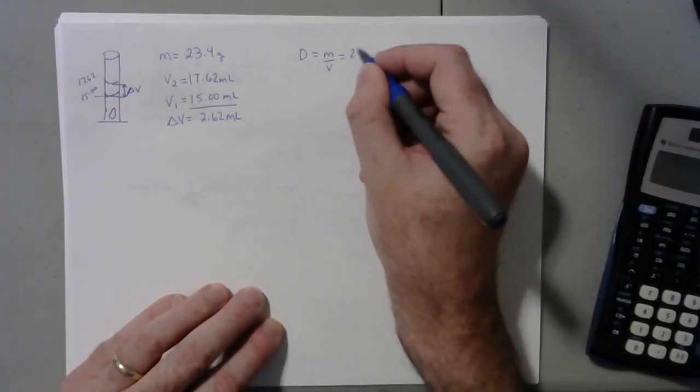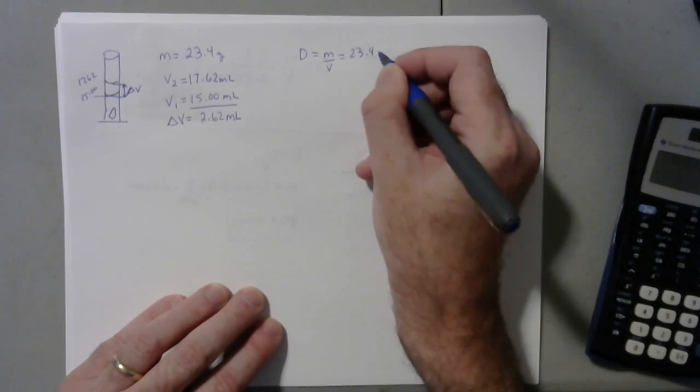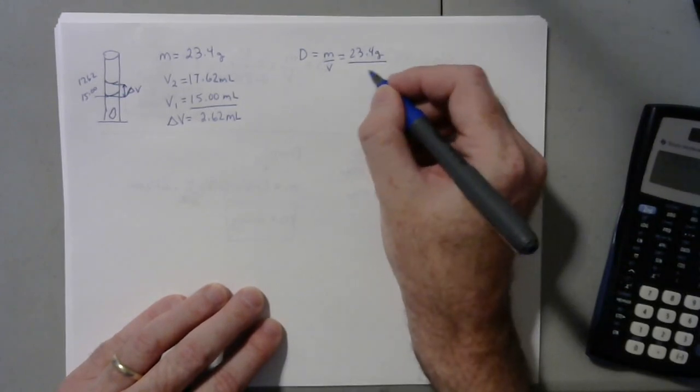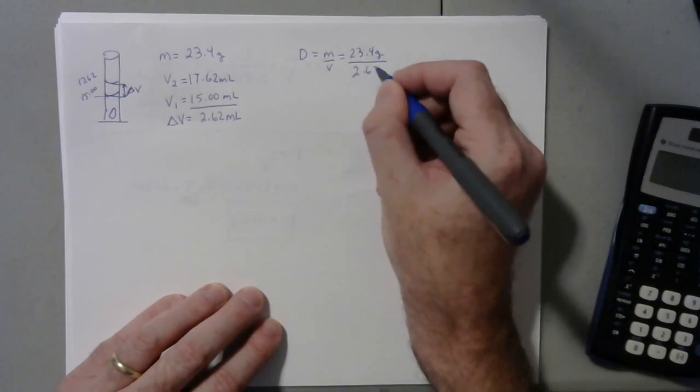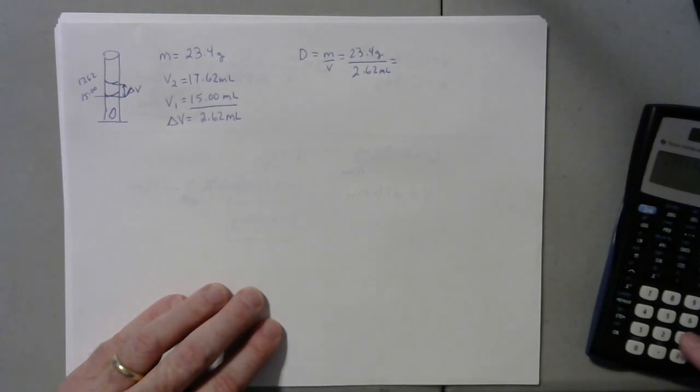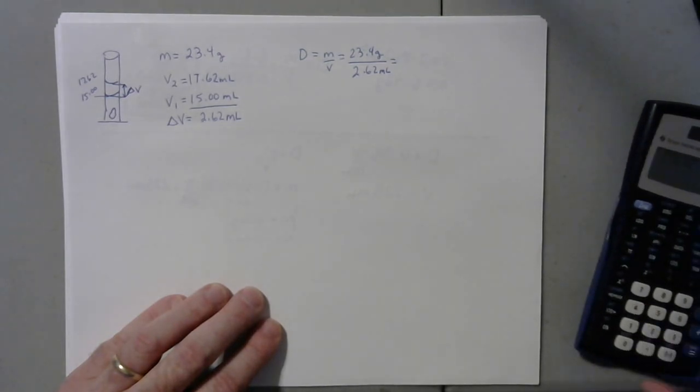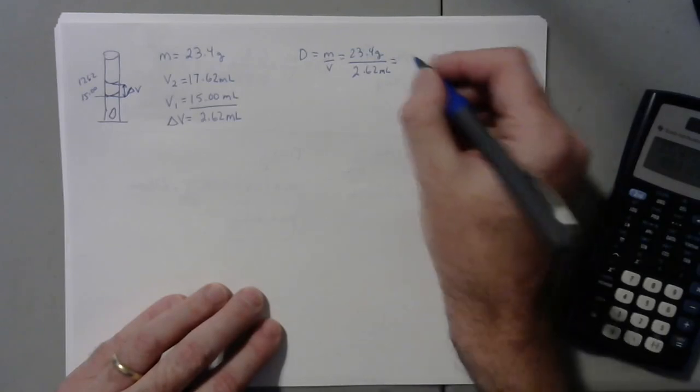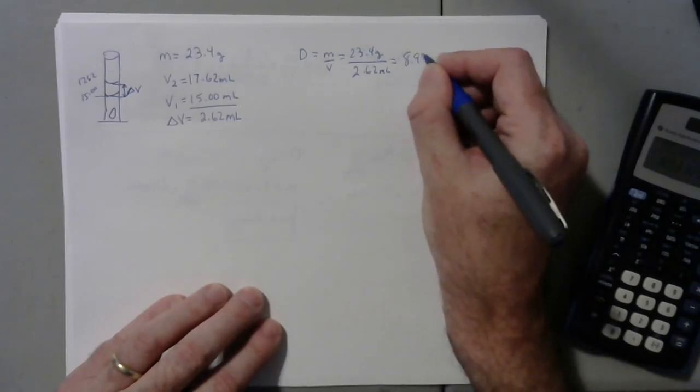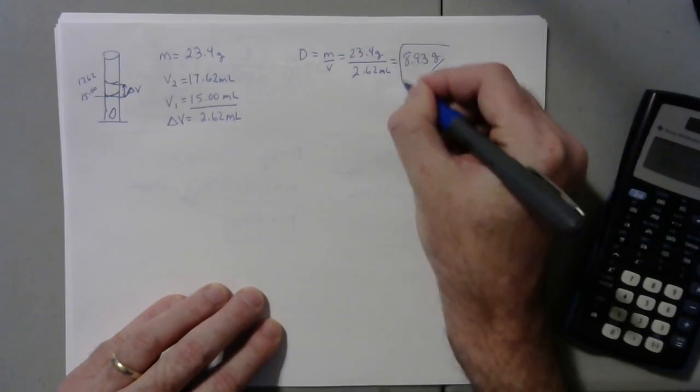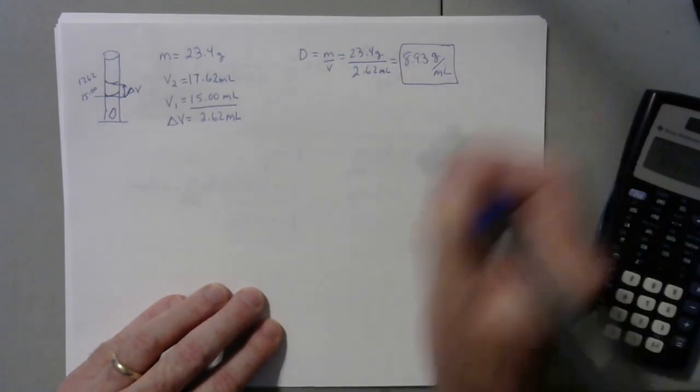So we're going to have 23.4 grams divided by 2.62 milliliters and we run that through our calculator. It's going to be 8.93 grams per milliliter and that would be your answer.